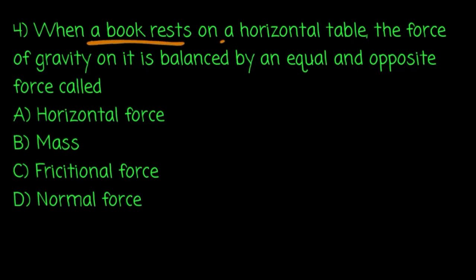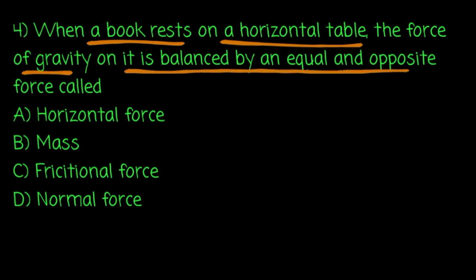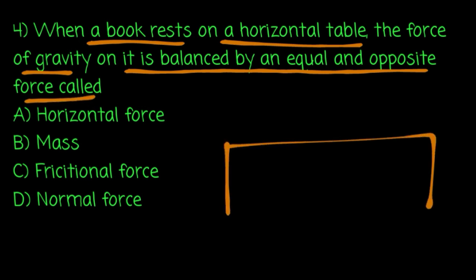When a book rests on a horizontal table, the force of gravity on it is balanced by an equal and opposite force called — and it is the same as the weight of the earth. On the left page, the force equals the mass of the earth.